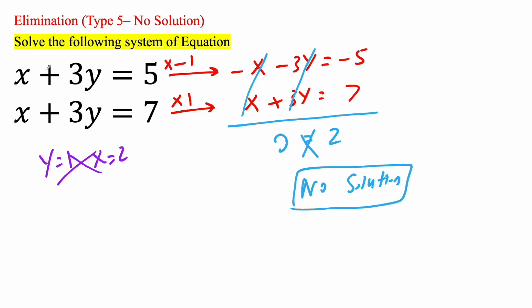And this makes sense because on the left hand side, x, 3y, 3y, they're both the same. But on the right hand side, they equal two different things. They equal 5 and 7. So that's not even possible. And that's pretty much it for this video.